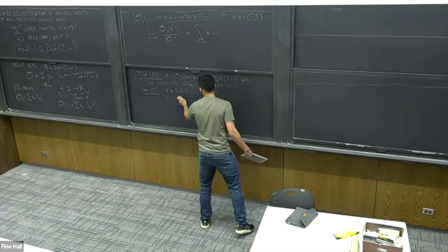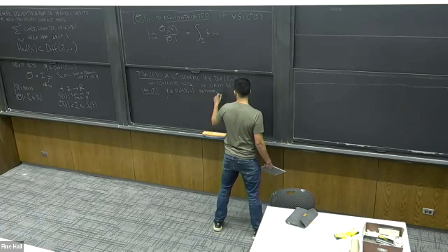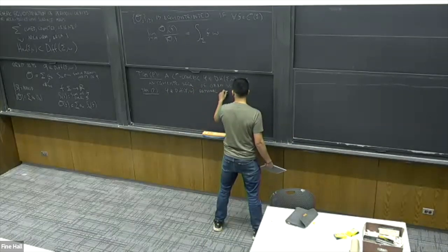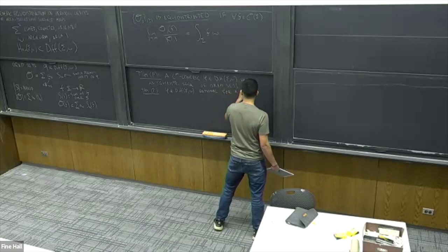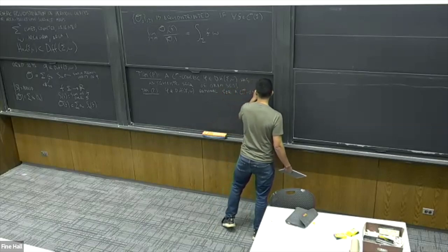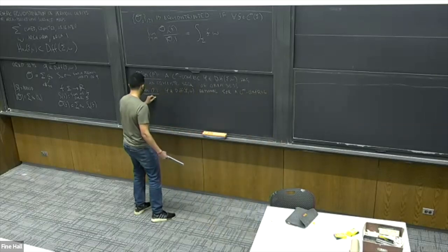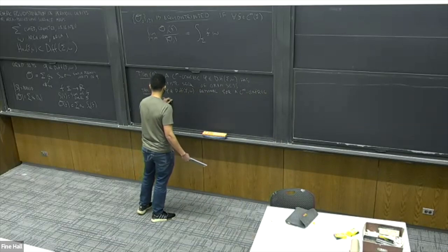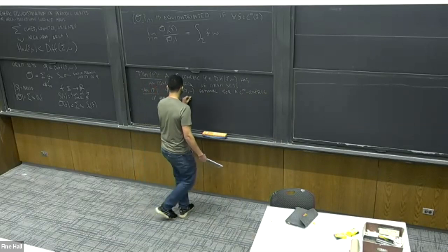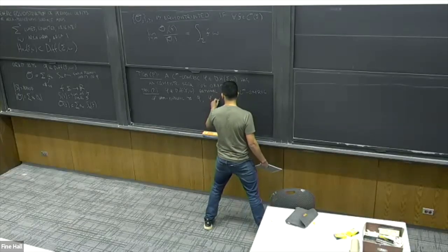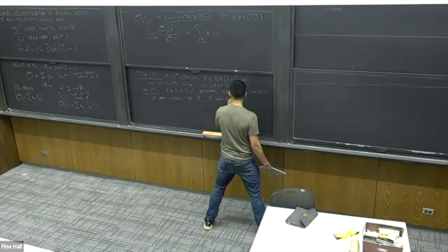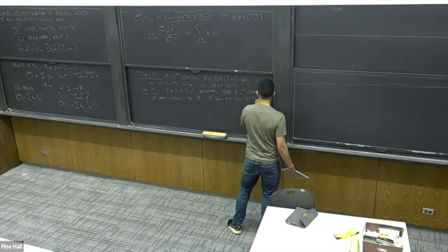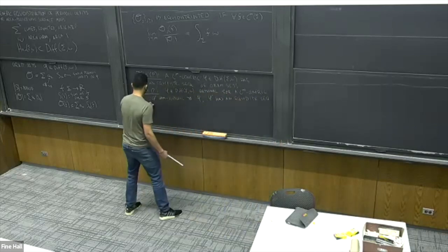Anyway, suppose we fix some rational map phi. Then for a C-infinity generic phi-prime which is Hamiltonian isotopic to phi, phi-prime has an equidistributed sequence of orbit sets.